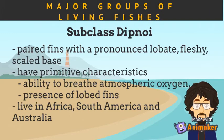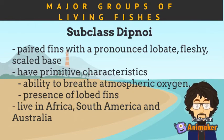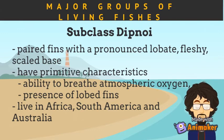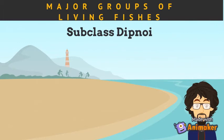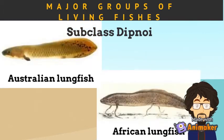Subclass Dipnoi have paired fins with a pronounced lobate, fleshy, and scaled base. They have primitive characteristics such as the ability to breathe atmospheric oxygen and the presence of lobed fins. They are found in Africa, South America, and Australia. Subclass Dipnoi includes the Australian Lungfish and the African Lungfish.